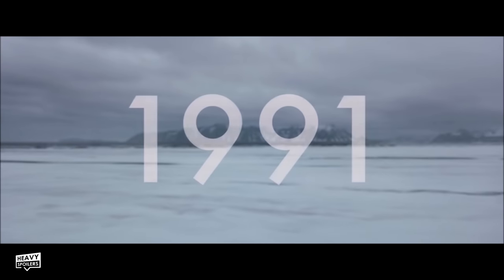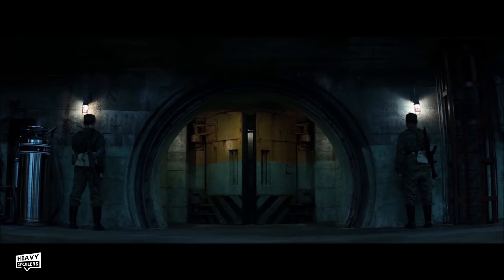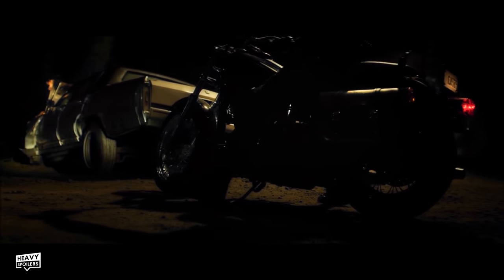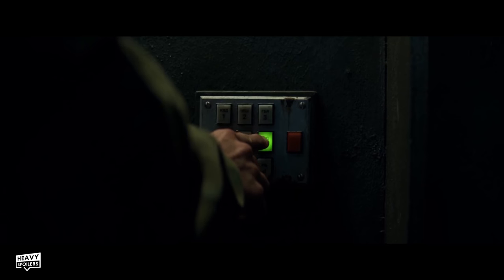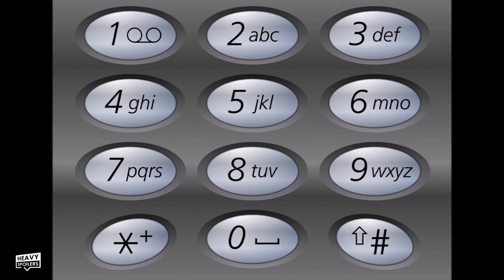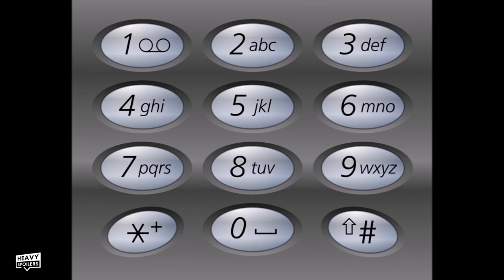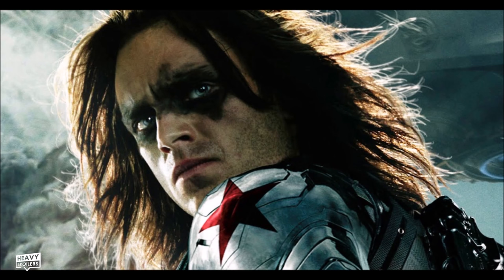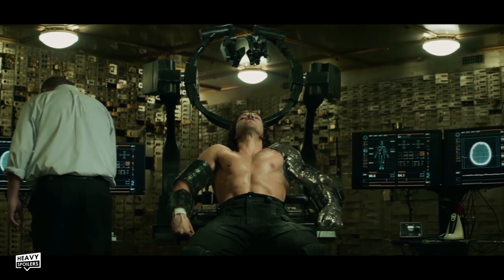The movie starts all the way back in 1991 with Hydra forces calling forth the Winter Soldier, carrying out a mission with massive repercussions that sets off a chain of events leading to the collapse of the Avengers. The code the soldier enters is 17826 — on a telephone keypad, 7826 corresponds to letters that spell 'Stan', a nod to Stan Lee. We then see the Winter Soldier book with the same star as Bucky's arm, and they wipe his mind using the same machine from The Winter Soldier.